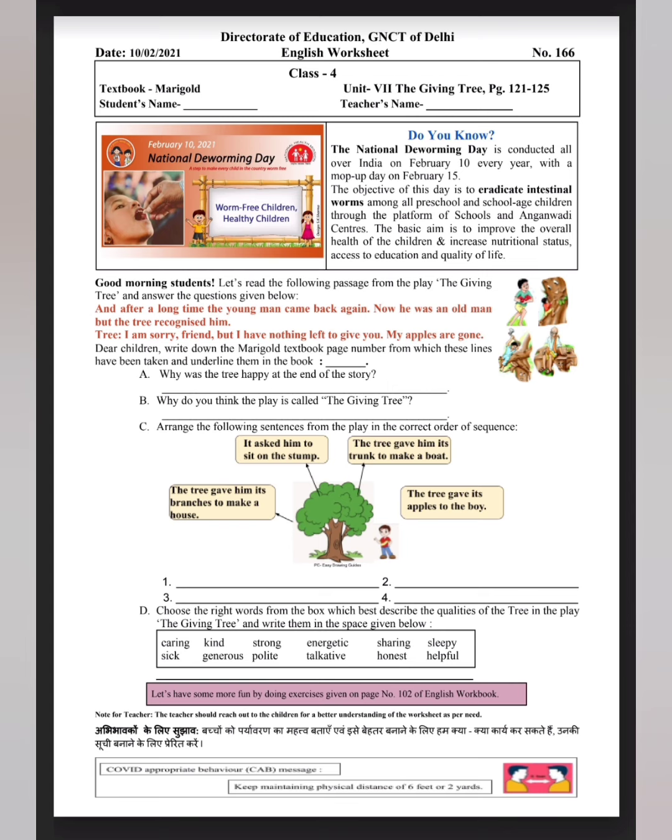So, this is the play line, which is a long time ago, when the young man, who was a friend of the tree, came back to the tree, and the tree recognized him again. Tree said, my friend, forgive me that I don't have anything to give you now because my apples are gone.